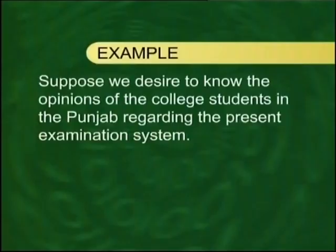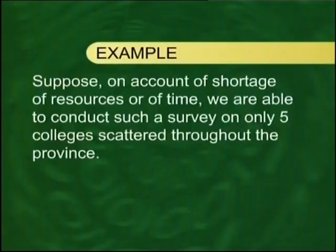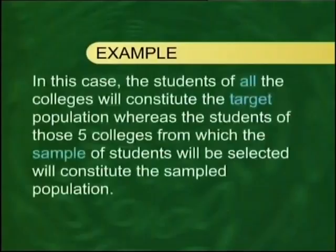For example, suppose we desire to know the opinions of college students in the Punjab regarding the present examination system. Our population would consist of the total number of students in all the colleges of the Punjab. But if, on account of shortage of resources or time, we are unable to survey all colleges and select only five colleges scattered throughout the province, then our target population consists of all the colleges, whereas the sampled population consists of those five colleges that we have chosen.